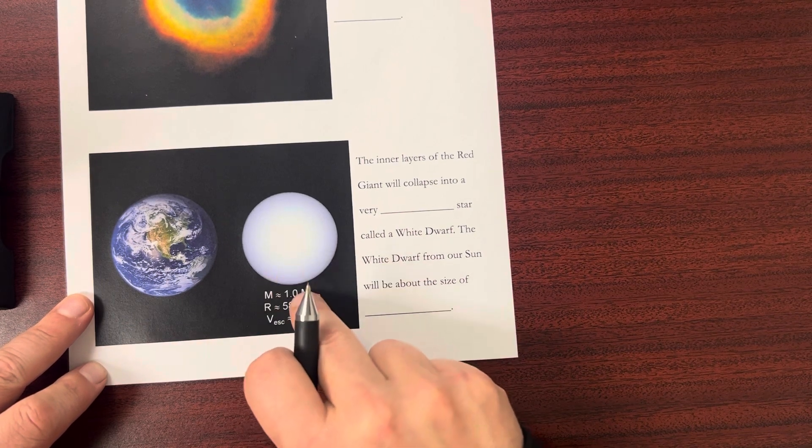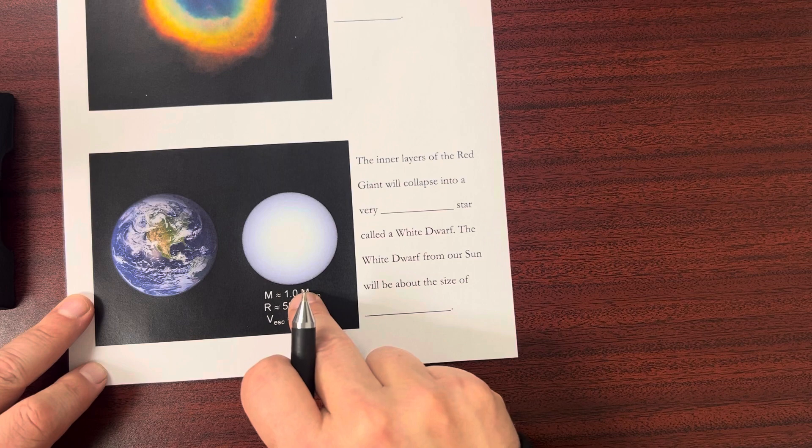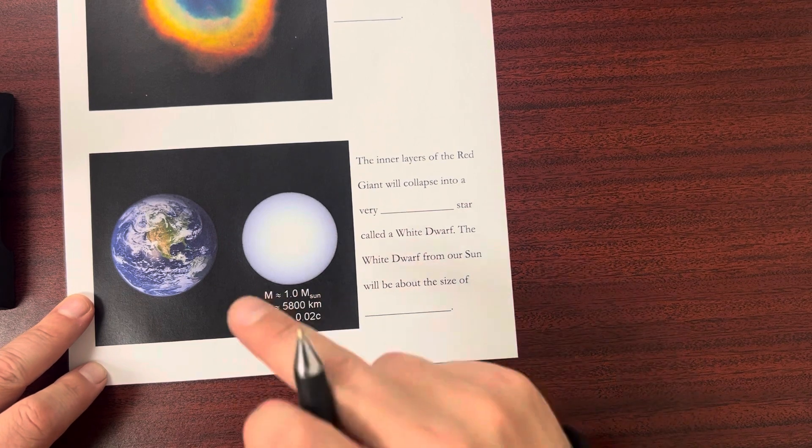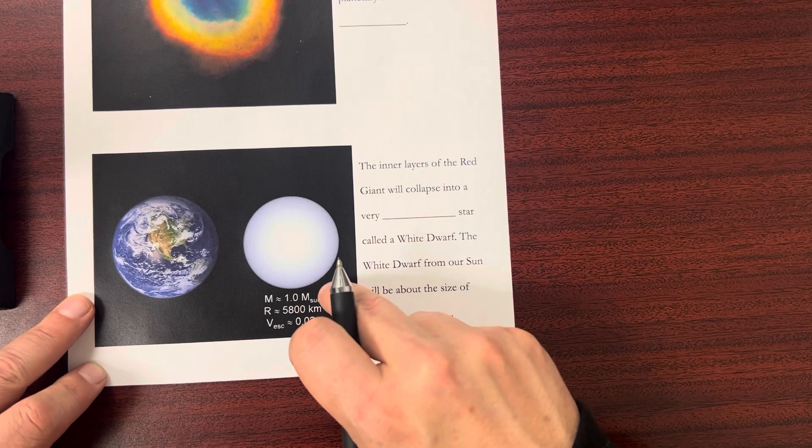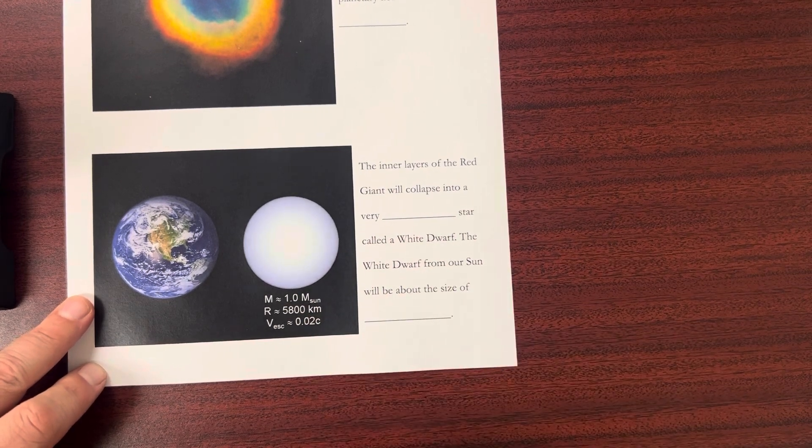Now, we'll talk some more about what happens when a really big star goes through the end of its life. It's going to be different than a white dwarf, a little bit more dramatic. We'll talk about that another time. Hope this helps.